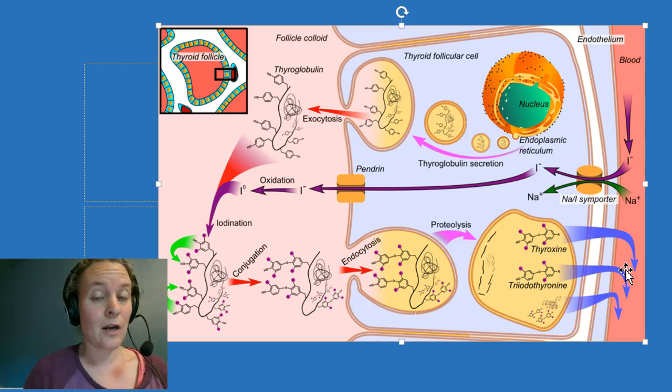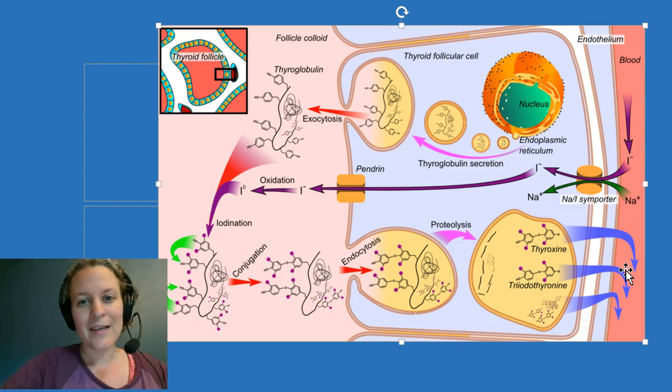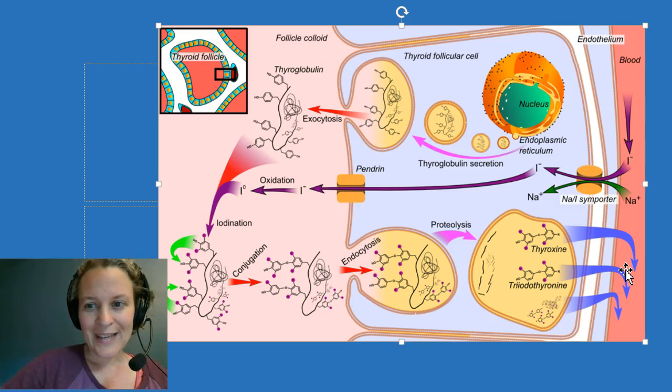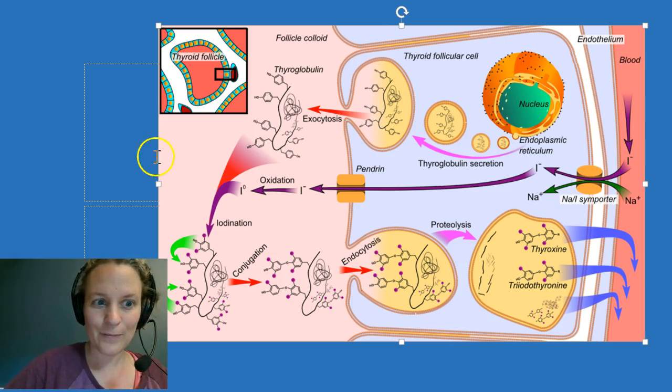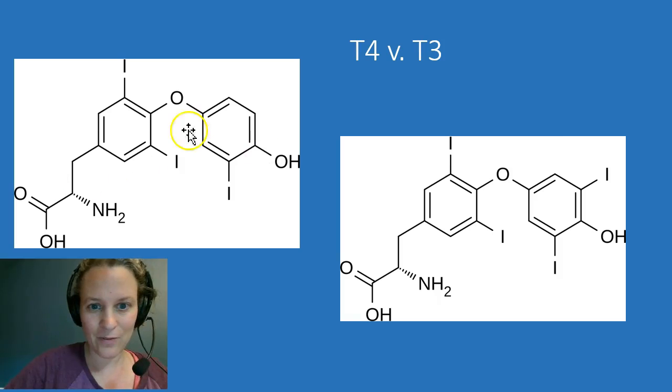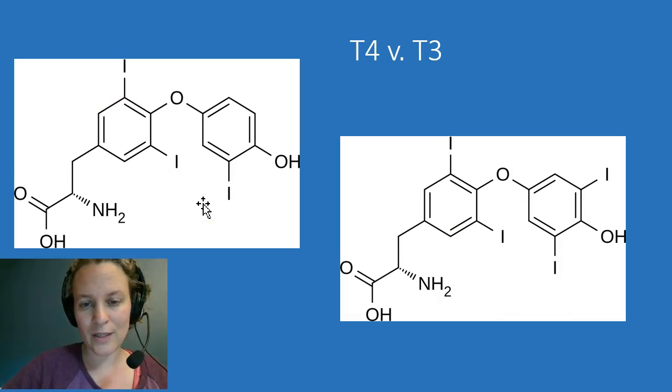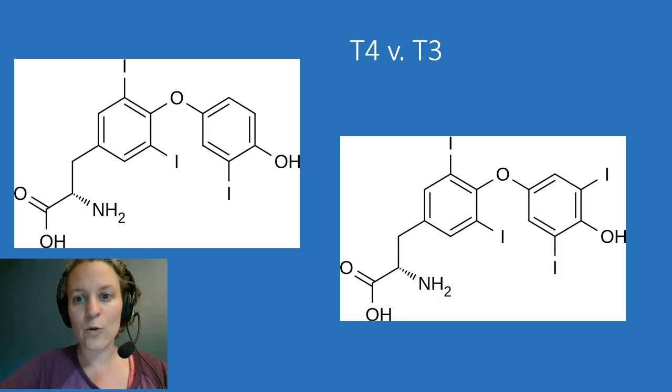So T4 lasts a lot longer in the blood, but T3 is really what we want if we want to stimulate the cells in the way that we've been talking about. So how does that happen? Well, it's really interesting. Clearly, in order to go from T4—right, T4 over here—to T3, what we need to do is take one of the iodines off. Right, like that's pretty simple. That's the only difference between these two things. But the question is, how do we do that?